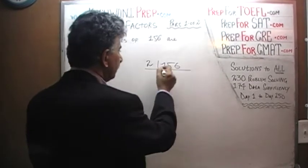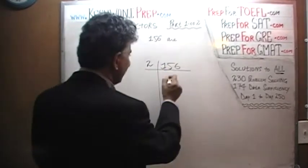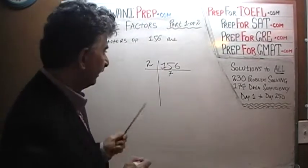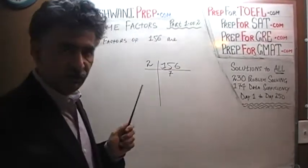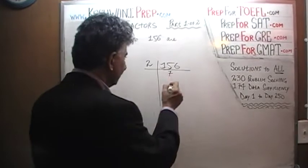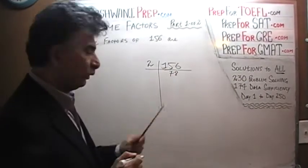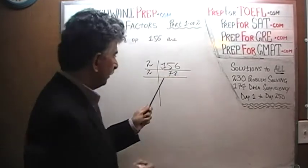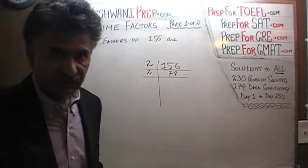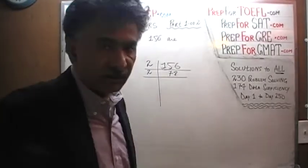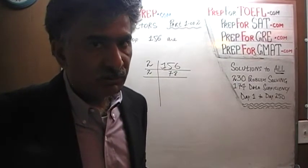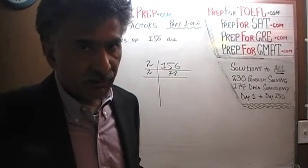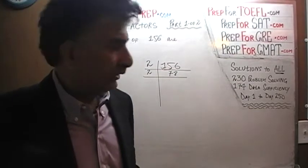Let's begin with 2. How many 2's in 15? 15 has seven 2's — 7 times 2 is 14 — the remaining 1 joins the 6 to become 16. How many 2's in 16? 16 has eight 2's. We find the prime number and divide by 2 one more time. Even though 78 is divisible by 3 — because the sum of its digits, 7 plus 8, is 15, and 15 is divisible by 3 — we do not divide by 3 yet.